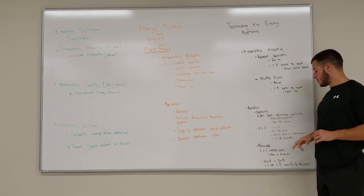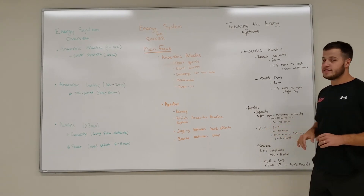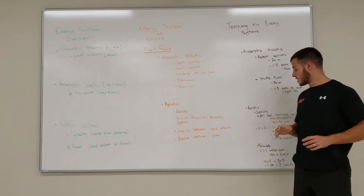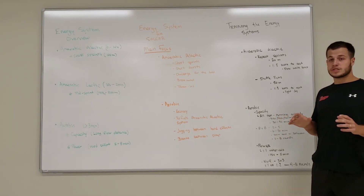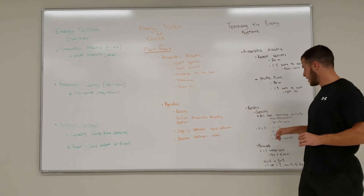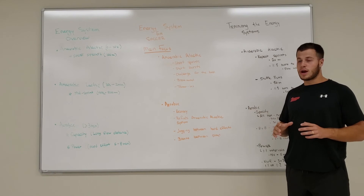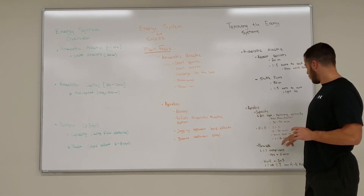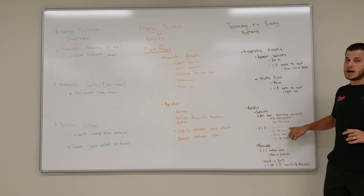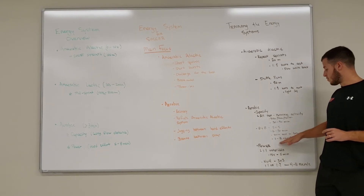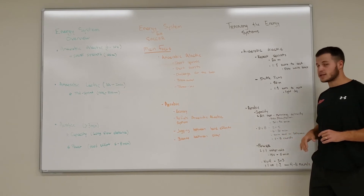For soccer-focused aerobic capacity conditioning, we use 8v8 or 5v5 small-sided games going anywhere from 6 to 30 minutes, with a one-minute rest between rounds, for one to eight rounds. The range in rounds depends on the duration — if you're doing 30-minute games, you won't do eight rounds, but with 6-minute games, eight rounds is more realistic.